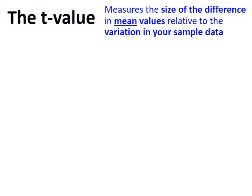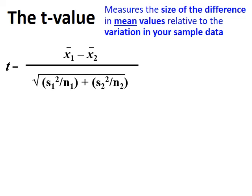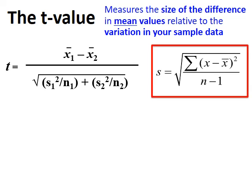To carry out the t-test we first need to work out a value called the t-value. The t-value measures the difference between the two mean values of our two data sets relative to the variation within both data sets. The t-value is worked out using an equation that will be given in the exam, and by doing enough examples you can learn to use it comfortably. We're going to learn how to work out the individual components and then put them into the equation.